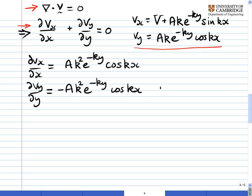Add those two together, and you get zero. So we've confirmed that the divergence of v is equal to zero, and therefore that the law of conservation of mass in an incompressible flow is conserved.